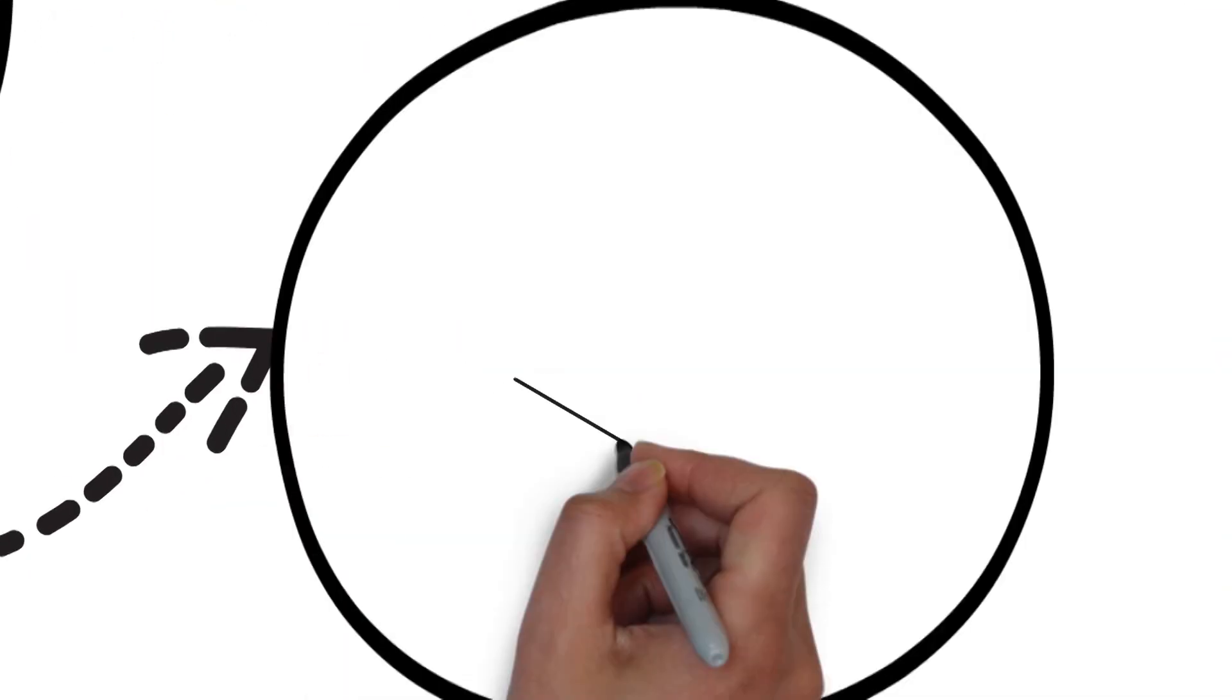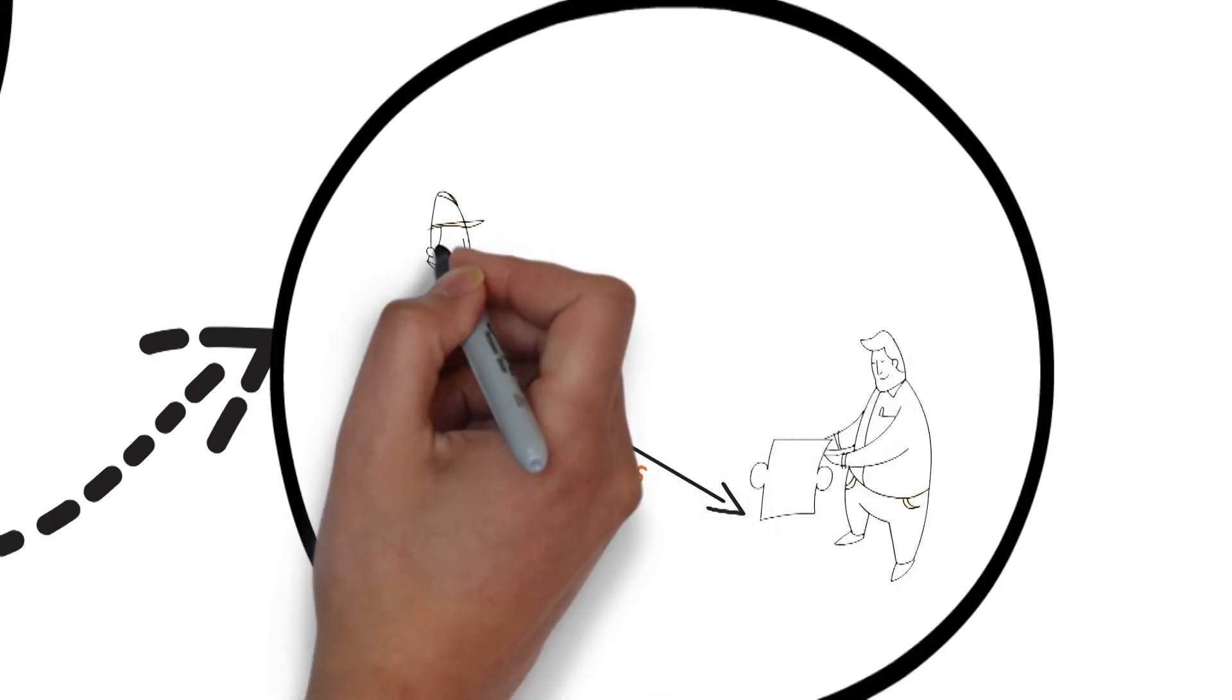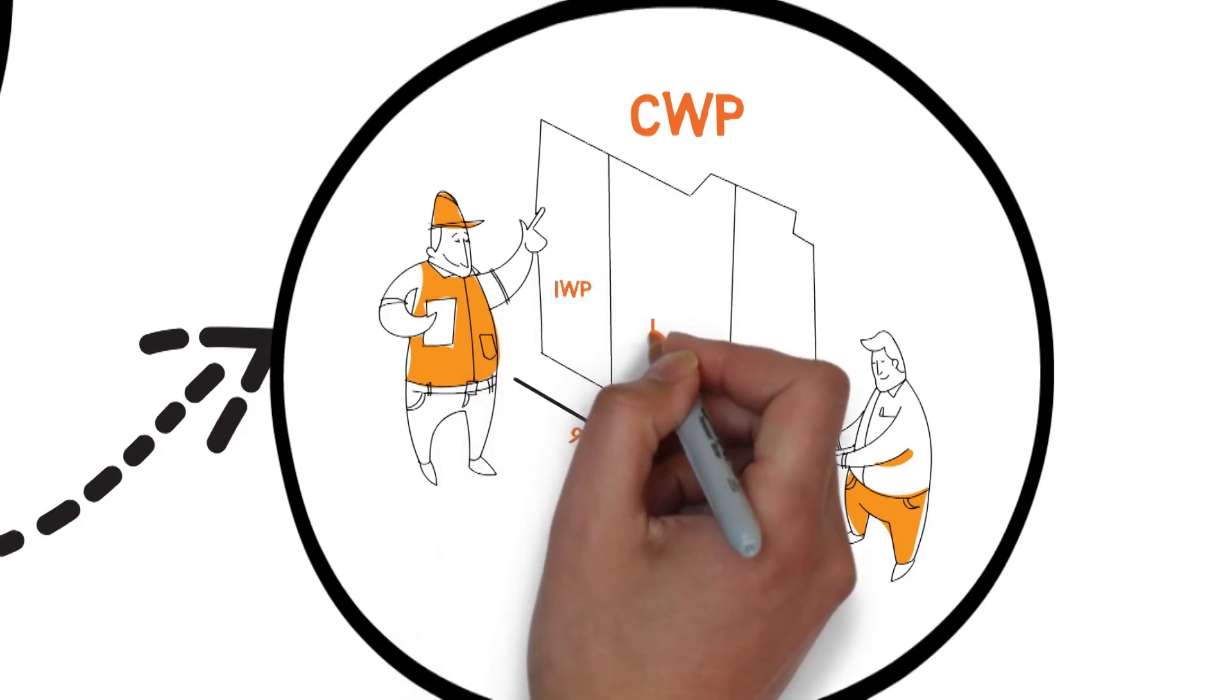As each CWP enters the 90-day window, the superintendent and work face planner refine the scope and create an outline for the development of installation work packages based upon the superintendent's execution strategy.